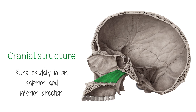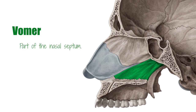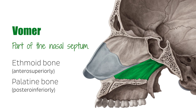The entire bone is ossified by means of the intramembranous pathway. The vomer is part of the nasal septum, which follows the midline of the viscerocranium and creates the division between the two symmetrical sides of the nasal cavity. To be exact, the vomer forms the posterior-inferior aspect of the septum, in between the perpendicular plate of the ethmoid bone anterosuperiorly, and the palatine bone posteroinferiorly.